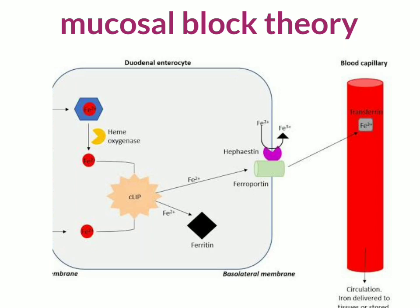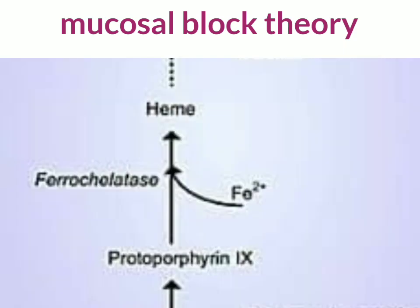It is then transported to the target site by the transferrin protein. For example, during erythropoiesis in the bone marrow, the conversion of protoporphyrin to heme is mediated by the enzyme ferrochelatase, and Fe2+ helps in the progression of this reaction.